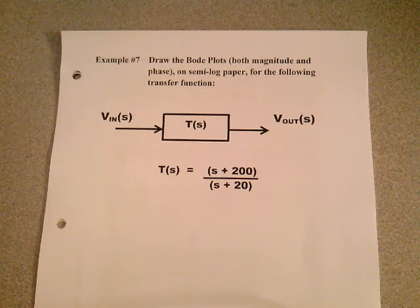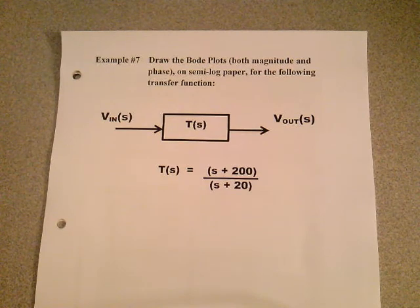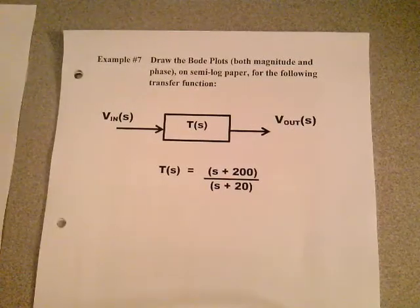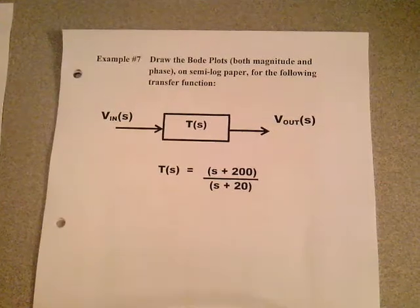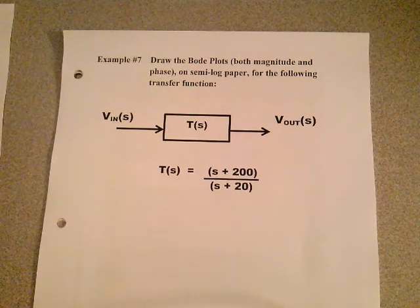Hello. This lecture will cover pages 219 through 229 of my lecture notes. Please print those pages out and have them in front of you as I present this lecture on Chapter 12K, Bode Plot Examples 7 through 9. This lecture is just going to cover briefly examples 7 through 9. We're not going to go through them in detail. You're responsible for them. I'd like you to try to work them out on your own.